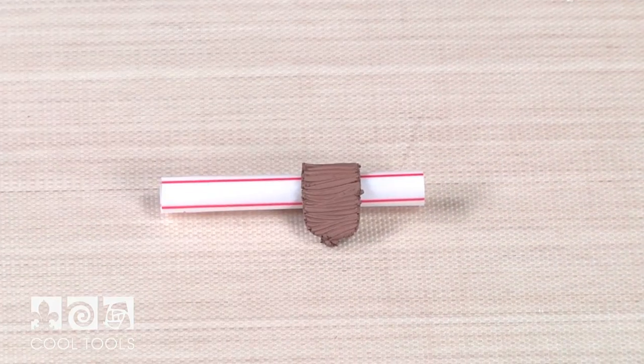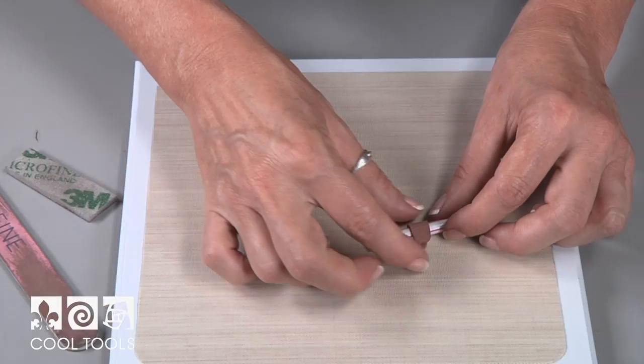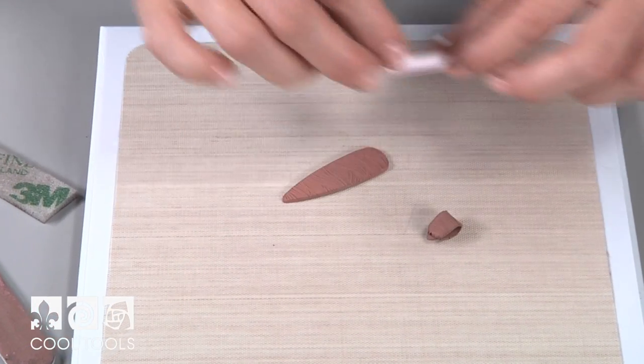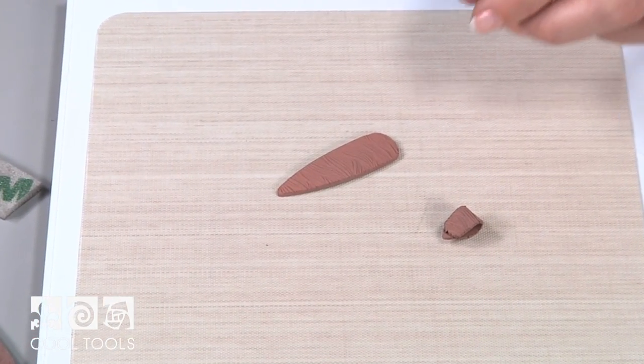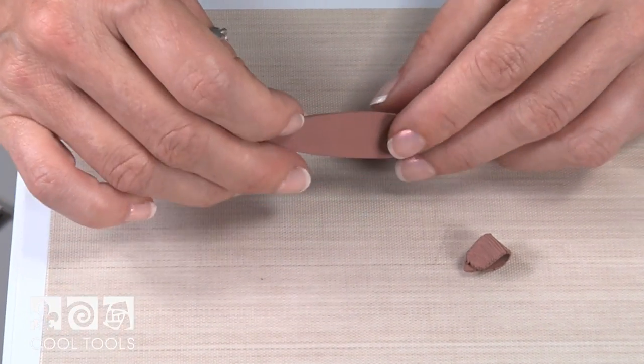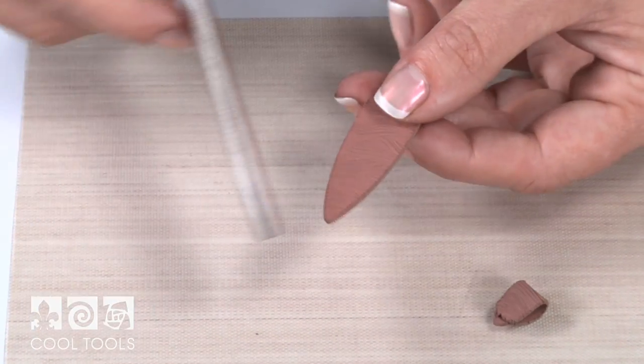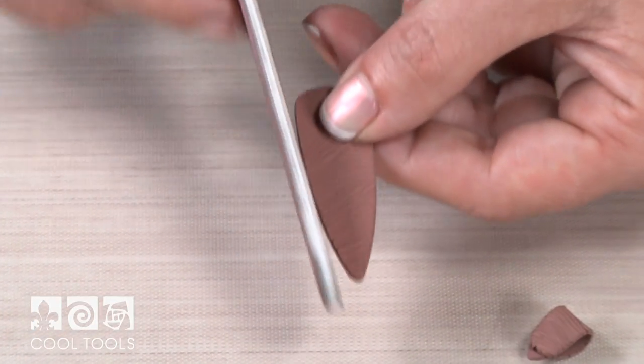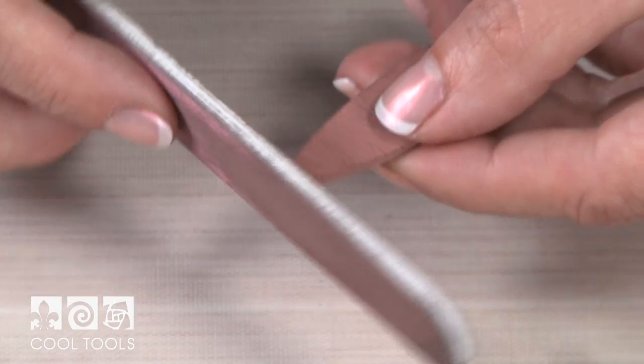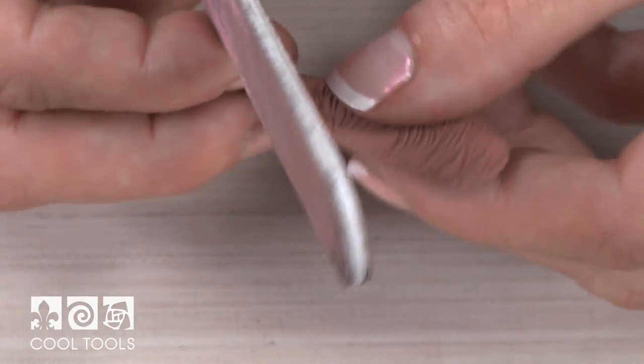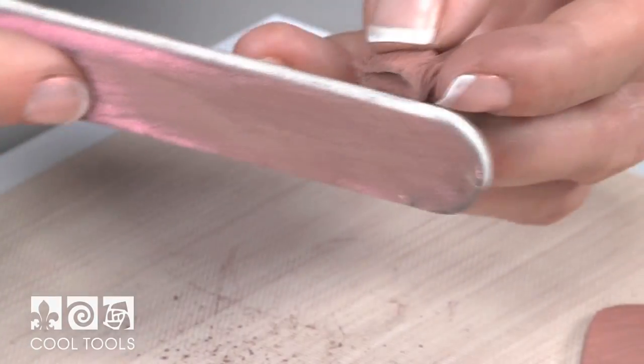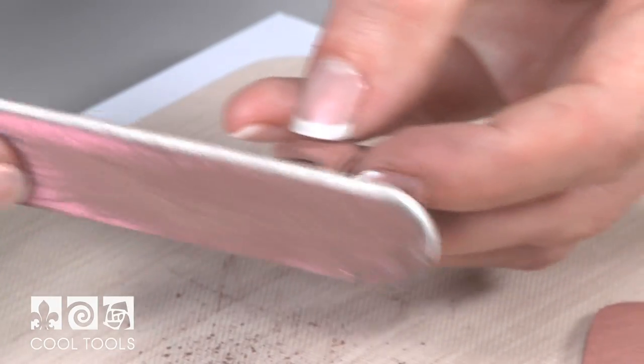Once the two pieces are leather hard, also known as the greenware state, we can get started refining them. Using an emery file or one of our Cool Tools smoothies, sand all the edges of the bale and the pendant. With a very light touch, smooth any rough edges. While the parts are in their greenware state is the very best time to sand and refine, as it's much easier to refine dry clay than solid bronze.